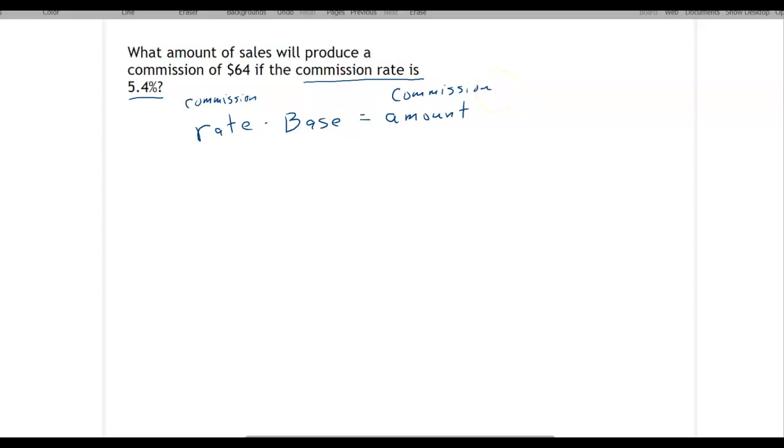What is this $64? The rate is 5.4%, which we'll write as 0.054. But the question is, what is the base and what is the amount, in this case the commission?